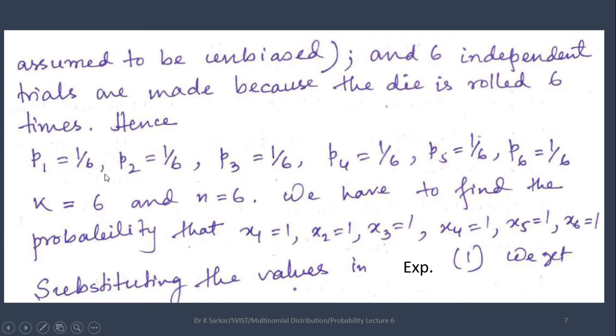Hence, p1 is 1 by 6, p2 is 1 by 6, up to p6 is 1 by 6, where k is 6 and n is 6. We have to find the probability that x1 is 1, x2 is 1, up to x6 is 1.